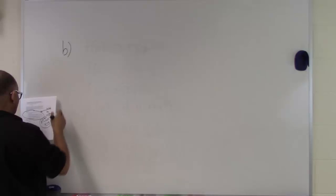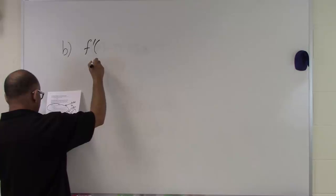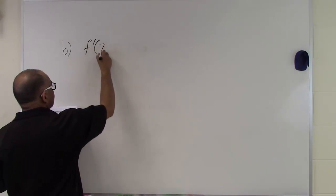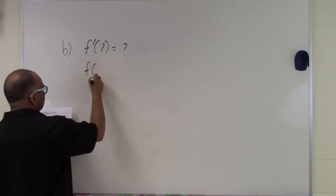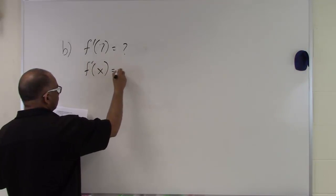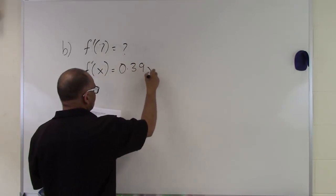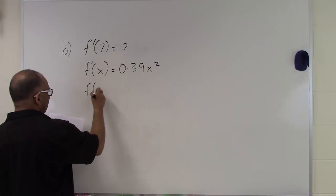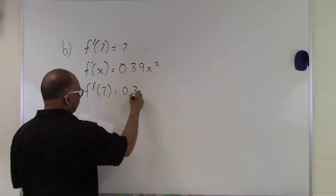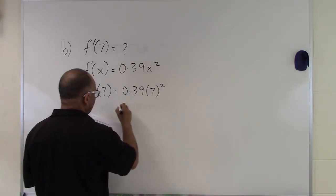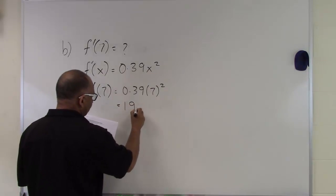In part B, we are asked to find f prime at 7. From our previous result, f prime of x is 0.39x², so the derivative at 7 would be 0.39 times 7 squared, and that gives us 19.11.